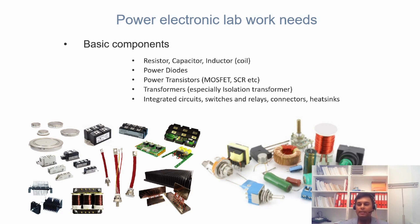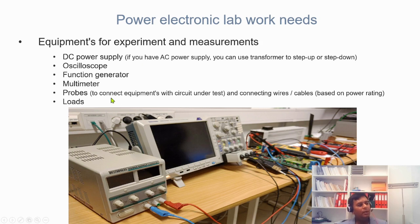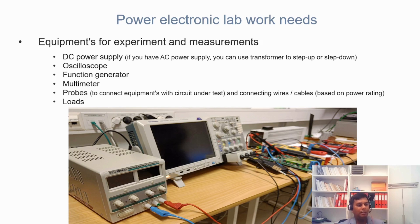Other than these components, what other things do you need? You need equipment. We must have several pieces of equipment in order to perform experiments in the lab. The first one is a DC power supply, which gives you whatever DC voltage you want to apply to the circuit under test.